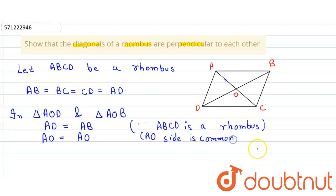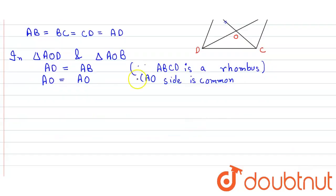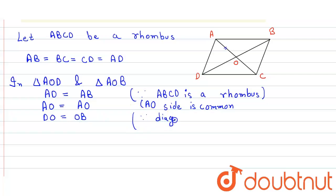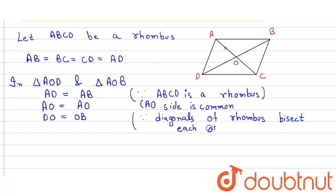Another side: DO = OB, because the diagonals of a rhombus bisect each other.